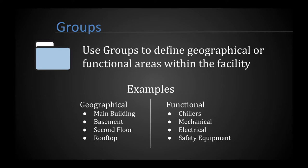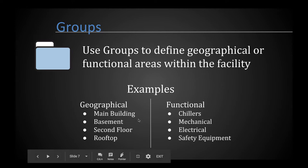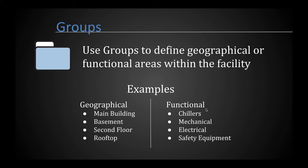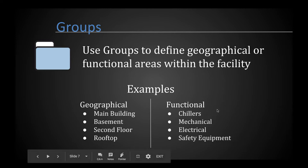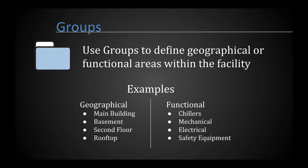You can organize groups geographically — for example, a group for the main building, another for the basement, second floor, and so on. Or you can organize them functionally, with a group called Chillers containing all equipment related to your chiller system. You can mix the two approaches as well — a top-level group for the main building with sub-groups for functional areas within it. Groups are simply a way to organize large amounts of information.